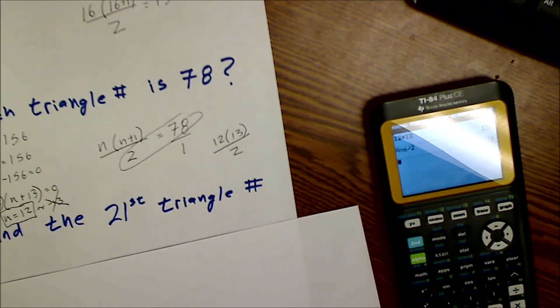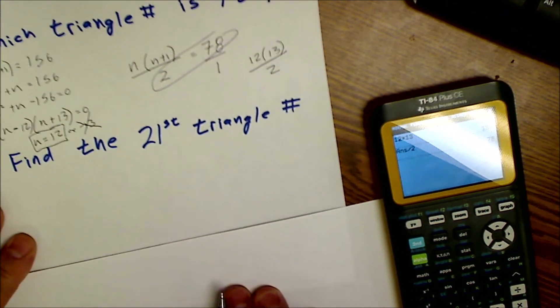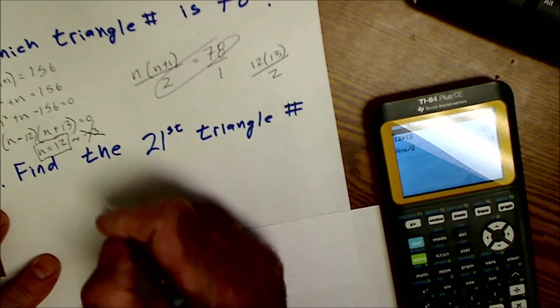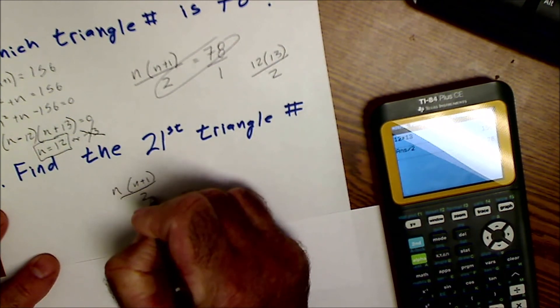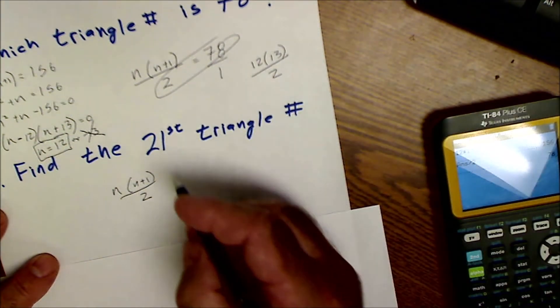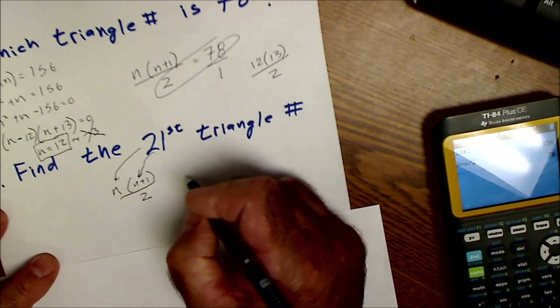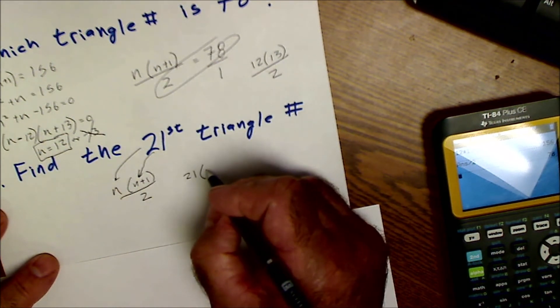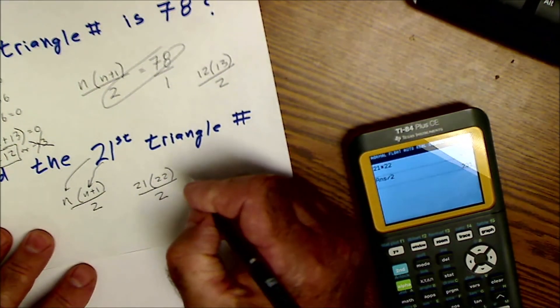All right. Lastly, find the 21st triangle number. So I'm saying the 21st term in the series. So I'm going to plug it into the equation again, n times n plus 1 divided by 2. It's the 21st term. So I'm plugging 21 in there and 21 in there. So I have 21 times 21 plus 1 divided by 2, 231.